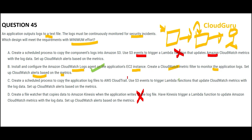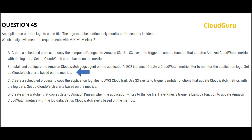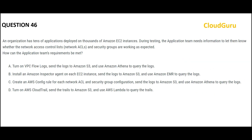Option C does a similar thing — it copies application log files to CloudTrail and triggers Lambda functions — not required. Options A and C may work, but are they minimum effort? No, the number of hops is very high. Option B has the lowest number of hops and hence that is my answer.